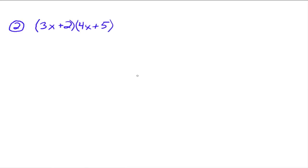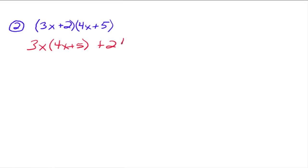Now it's not a monomial out in front — you've got two terms. This is a binomial times a binomial, but we can still use the distributive property. Think of this 4x plus 5 as one thing. The second binomial is one thing, and we need all of it to multiply times the 3x, and then we need all of 4x plus 5 to be multiplied by the 2. We can formally write it out as 3x times (4x plus 5), plus 2 times (4x plus 5). This step shows the actual distributive property at work.